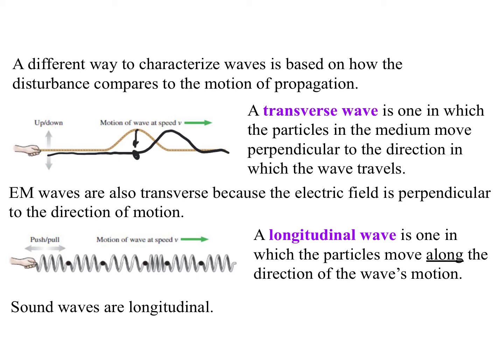In contrast, a longitudinal wave is one in which the particles move along the direction of the wave's motion, although they still oscillate back and forth. So here the person pulls back and forth on the slinky, and this dot moves towards their hand and away from their hand, and so there's a compression and an expansion.